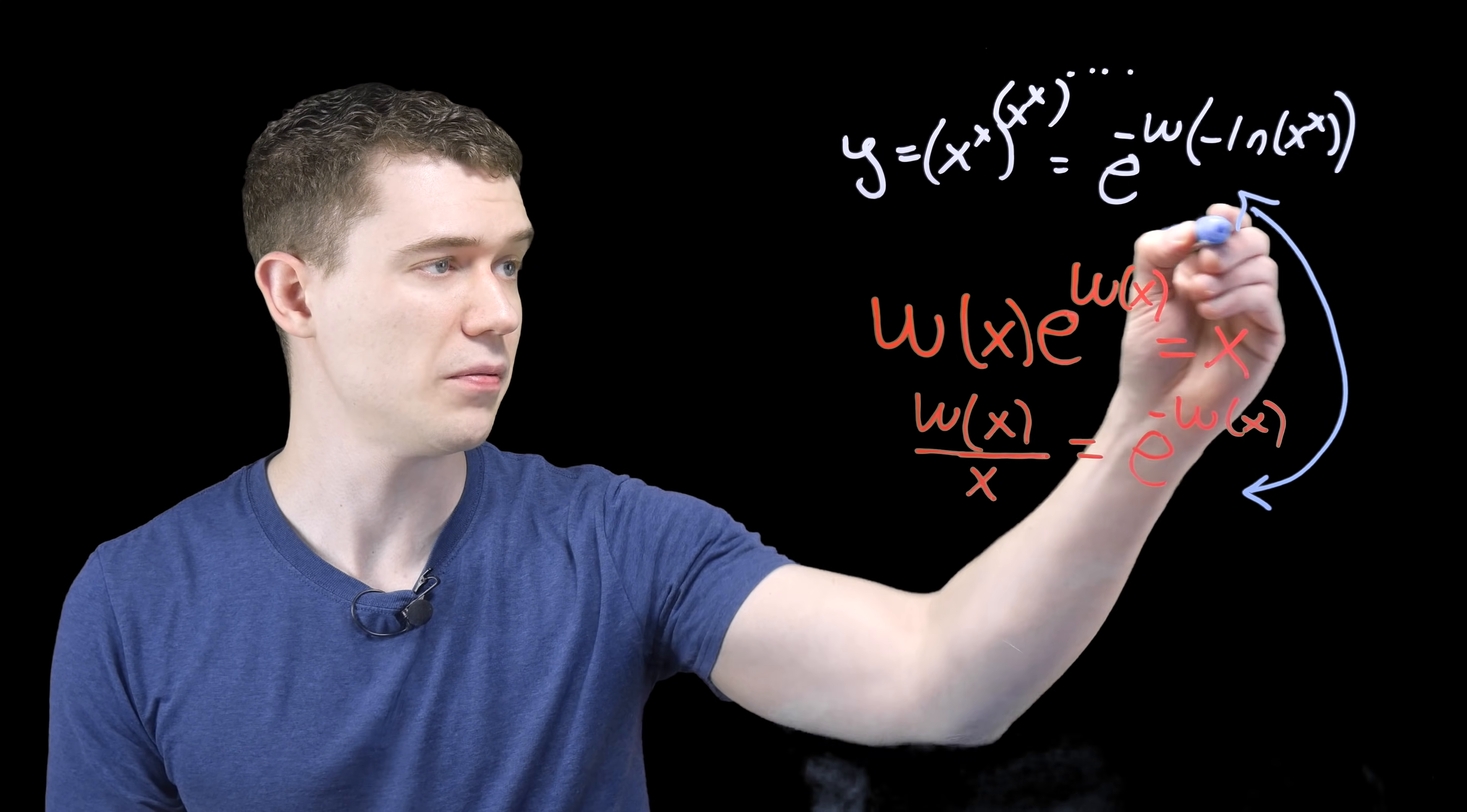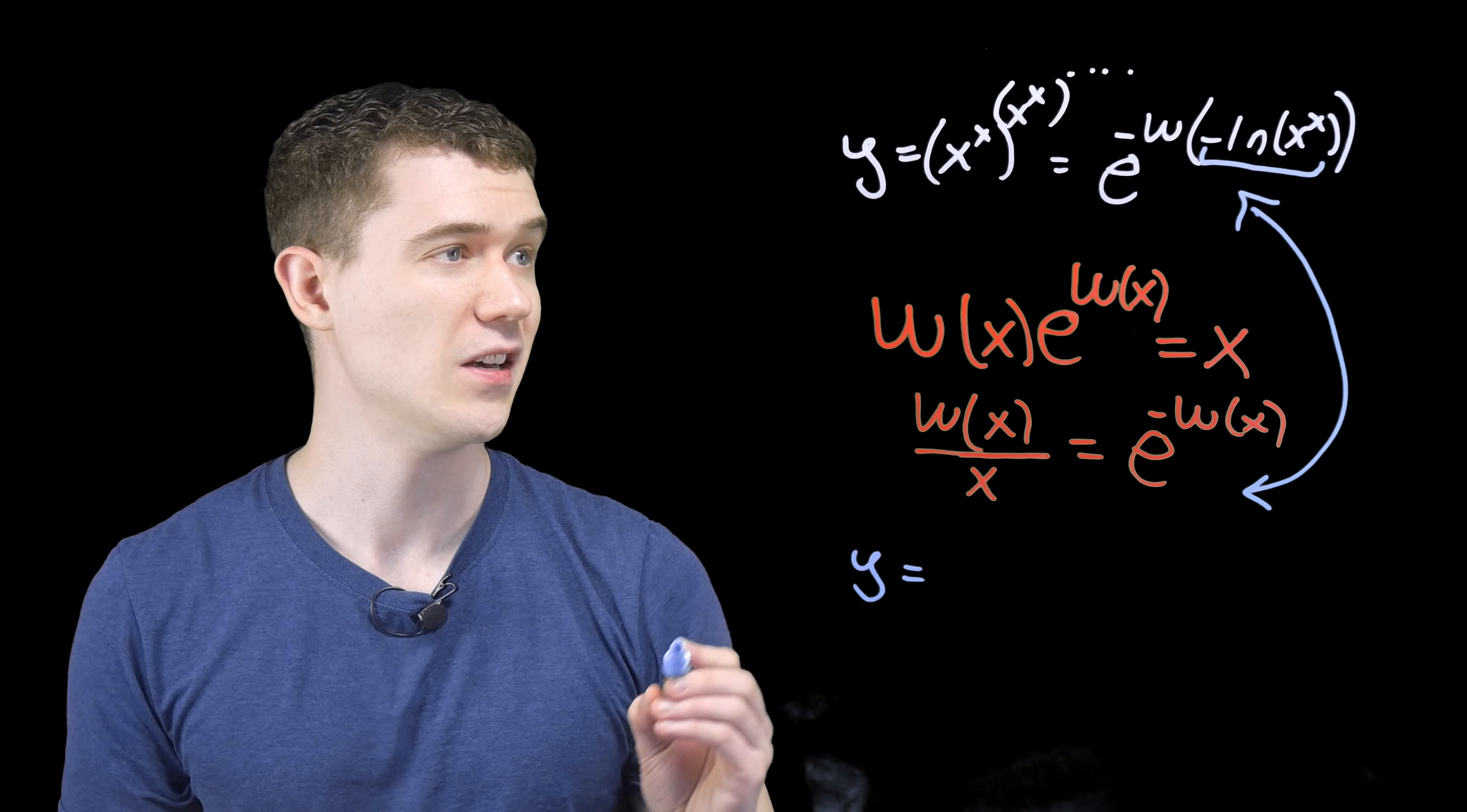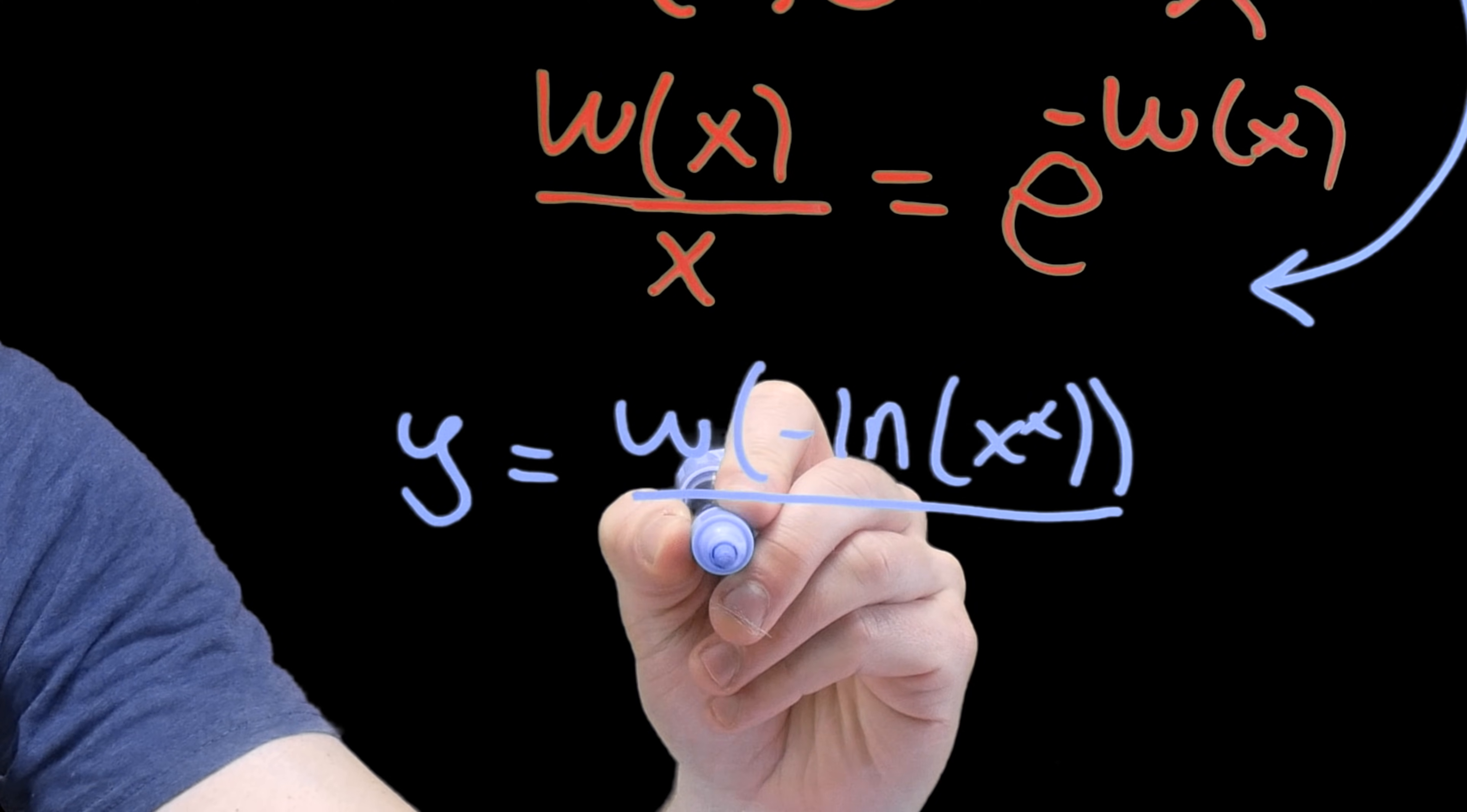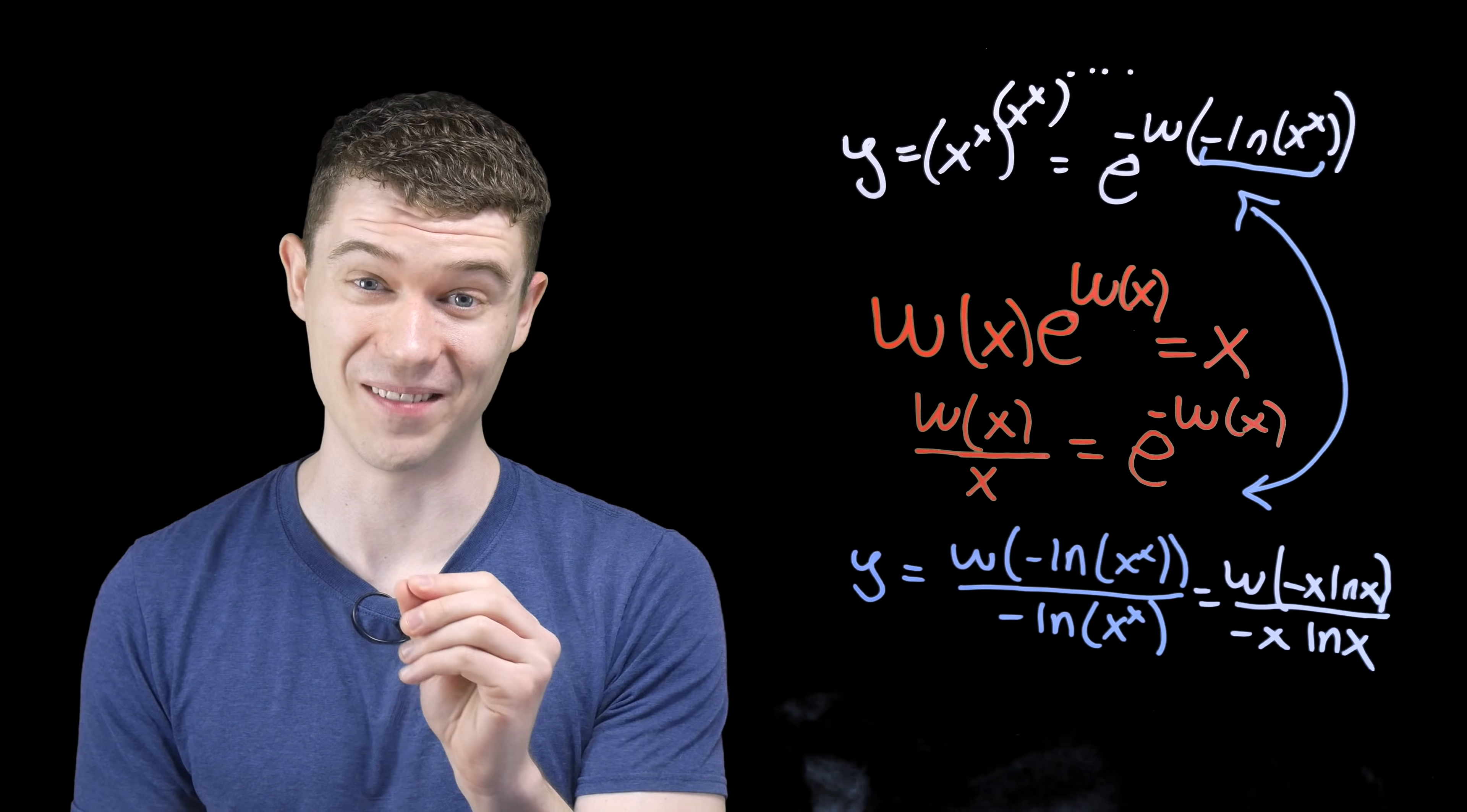Just match these things up. And we now have y as, well it's w of x over x, but it's not x in this case, it's minus ln of x to the x. So this will be w of minus ln of x to the x. And maybe let's just take advantage of those logarithms one more time to drop down these x to the x powers. And we're finally getting somewhere.